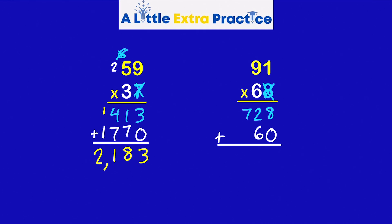6 times 1 is 6. 6 times 9 is 54. My partial products are 728 and 5,460. Add these together. And my product is 6,188.